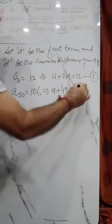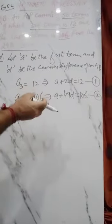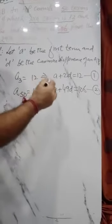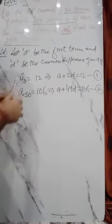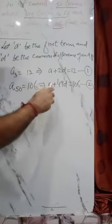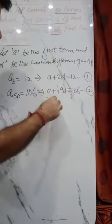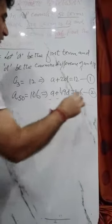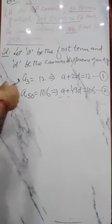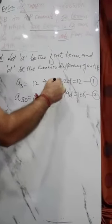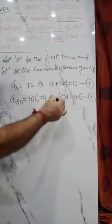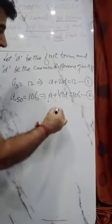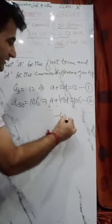So now two equations are formed. We will solve them using elimination method. We'll change signs, make this negative. Let us subtract. a and minus a cancel.